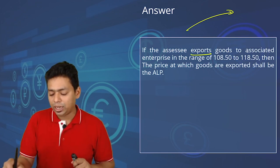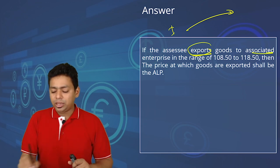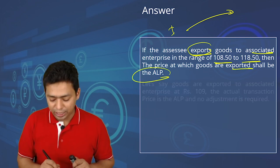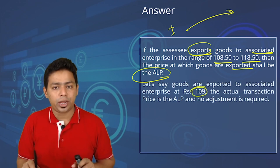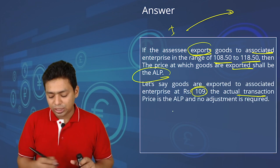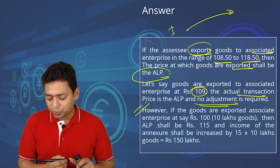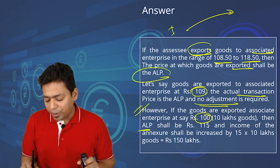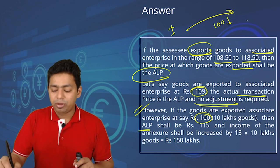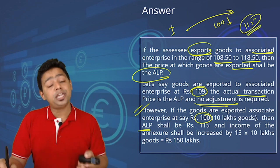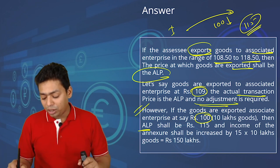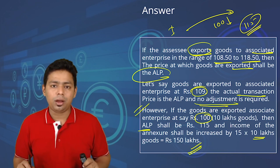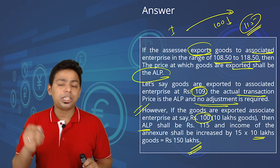If ACC exports goods — an income-side transaction — within the range of 108.5 to 118.5, say at 109, the actual transaction price is the arm's length price and no adjustment is required. However, if goods are exported to an associate enterprise at 100 with 10 lakh units, the arm's length price is 115, meaning income is understated by 15 per unit. Income will be increased by 15 multiplied by 10 lakh, adding 150 lakh as a transfer pricing adjustment to total income.